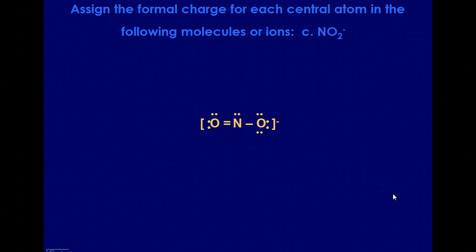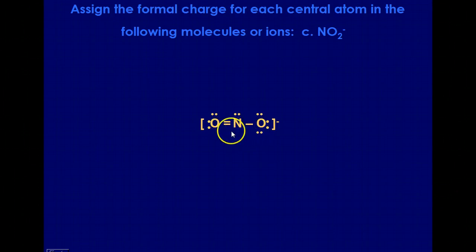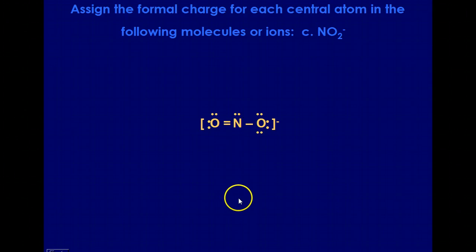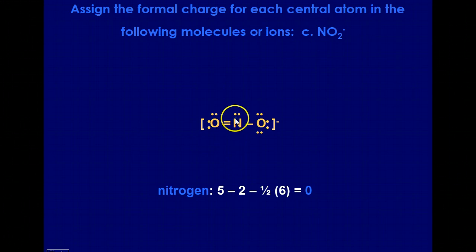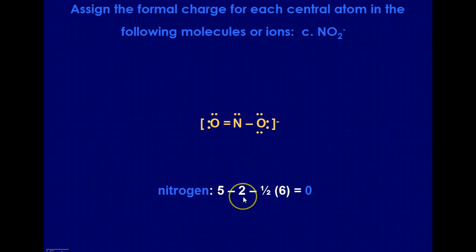Finally, we look at NO2. There's a double bond between nitrogen and the oxygen on the left, and a single bond between nitrogen and oxygen on the right. This double bond can move back and forth between the two, but that doesn't change the number of bonds surrounding the nitrogen atom. Nitrogen has five valence electrons; it has two lone electrons assigned to it. It has three pairs of electrons being shared, so six electrons total. Five minus two lone electrons gives three, and then half of six takes away another three, leaving a formal charge of zero.